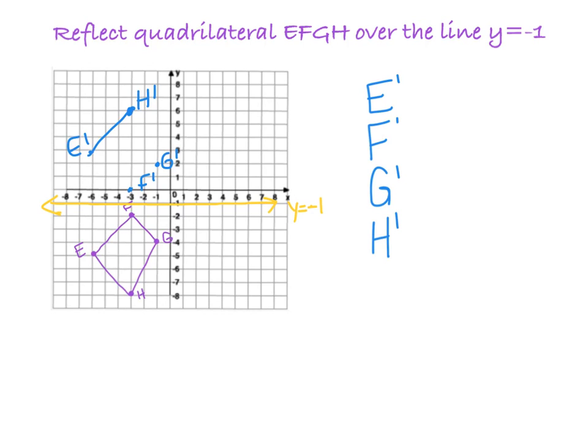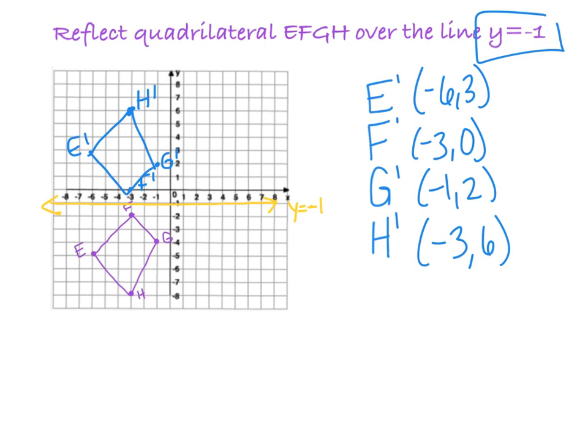Now I just connect my points, and on this one it's asking for the coordinates, so let's see. E prime is negative 6, 3. F prime is negative 3, 0. G prime is negative 1, 2, and H prime is negative 3, 6. So we just reflected quadrilateral EFGH over the line Y equals negative 1.